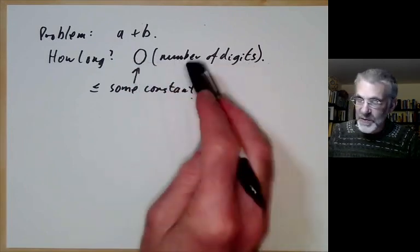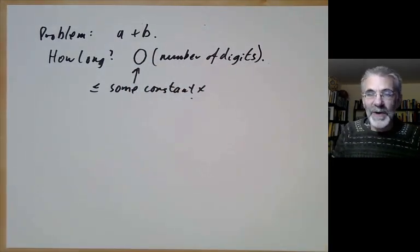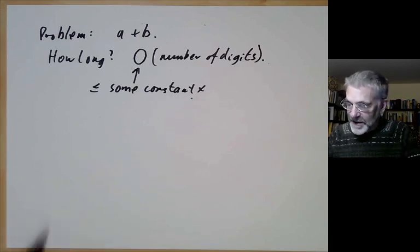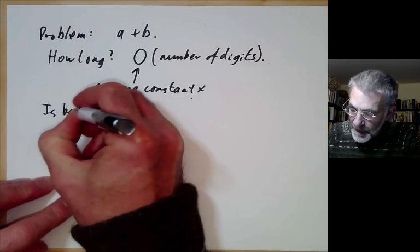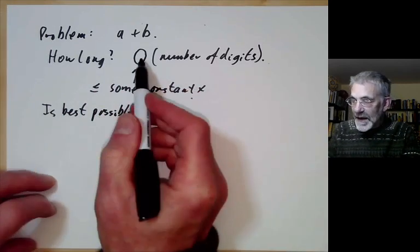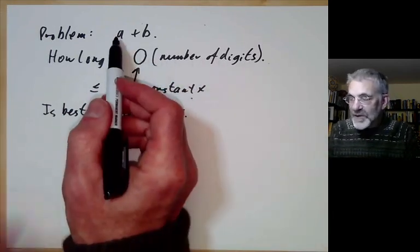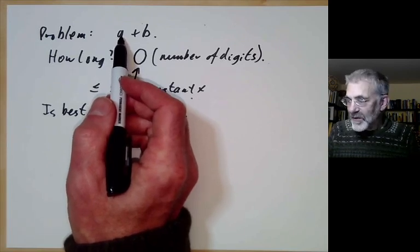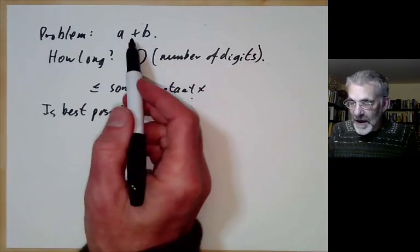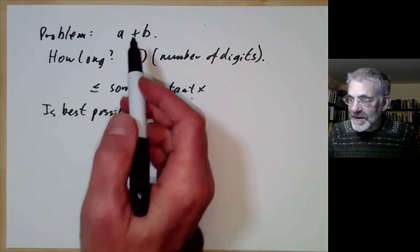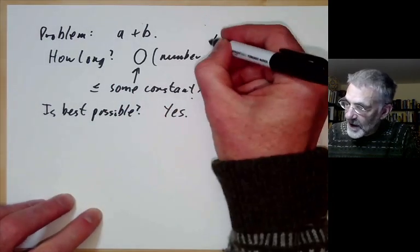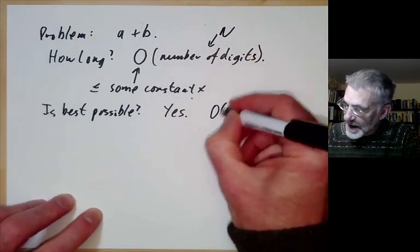What O means is it's some constant times the number of digits — more precisely, it's less than or equal to some constant times the number of digits. It might be twice or three times the number of digits, but we don't really care because that depends on minor details of how you implement it. This is best possible because it takes O of the number of digits even to read in the number A. If we write the number of digits as N, we would say this takes O(N) steps.